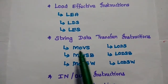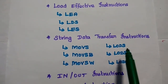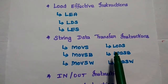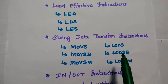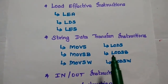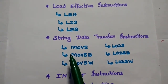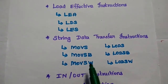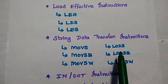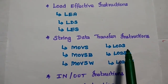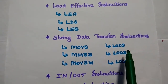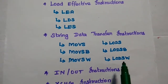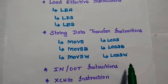The next one is String Data Transfer Instructions. These instructions are mainly used to transfer the String Data Type — that is MOVS, MOVSB, MOVSW, and Load. Load that String Data Address: Load ES, Load SP, Load SW.